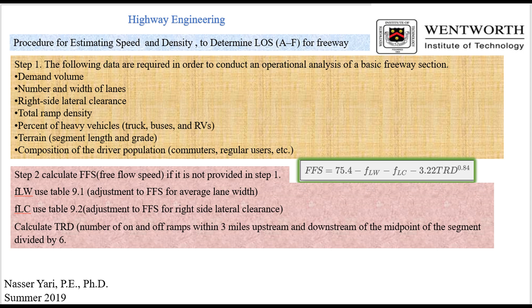In step two, we're going to calculate FFS and we're going to use that formula that we have. And the one thing about the formula, you have to be careful, you have to go to the table to find out FLW adjustment, that's for the lane width. And FLC, that's adjustment for the right shoulder. And once we have that, then we can go ahead and find out the total ramp density based on how many ramps is within the six mile segment of the highway.